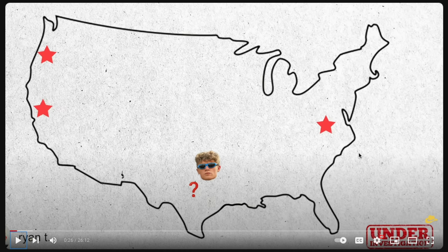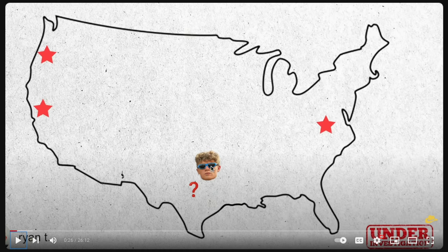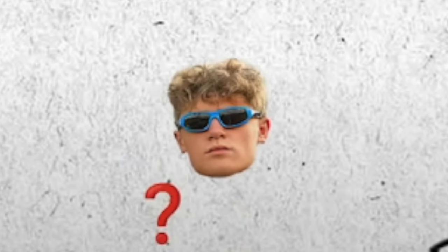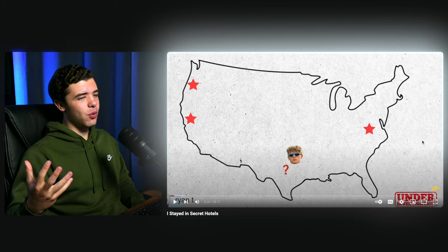We get a very simple map — literally just an outline of the US with a cutout of him going to a star location. With the sound design, a lot of this stuff has like a low hit impact — a boom boom boom — to make things dramatically fun when elements are added. Those are the small details I'm talking about.